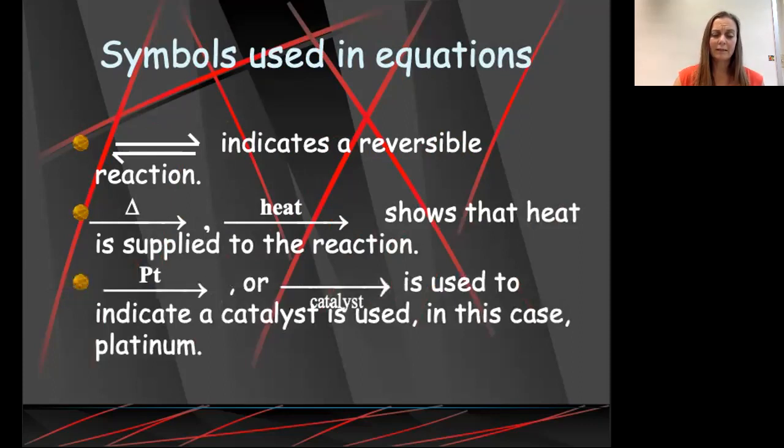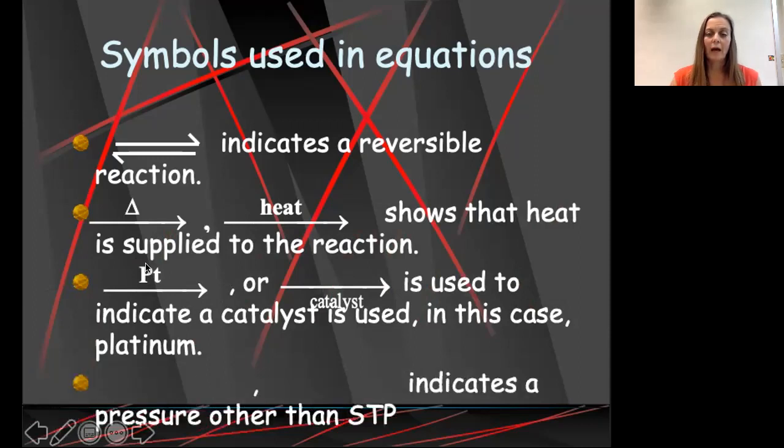One of the last symbols over or above our arrow is this arrow with either an elemental symbol like platinum or the word catalyst. That tells us that a catalyst is being used in this reaction to make the reaction go faster. In this first case, we can see that the catalyst that we're using is platinum. If we have an arrow with the word pressure or with an actual pressure above or below it, that means that we are at a pressure other than standard temperature and pressure.